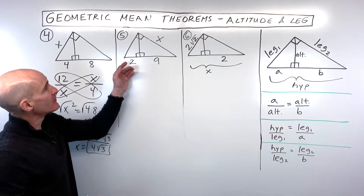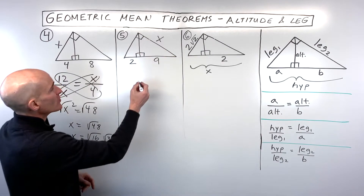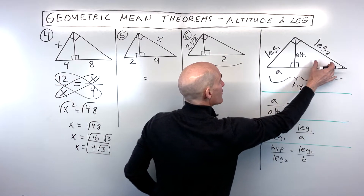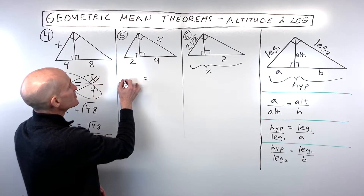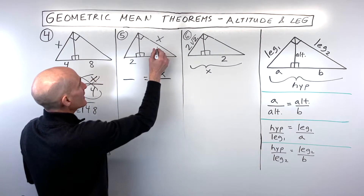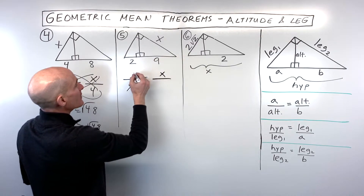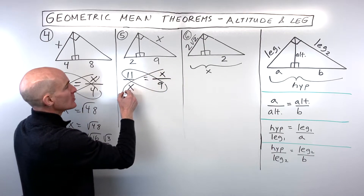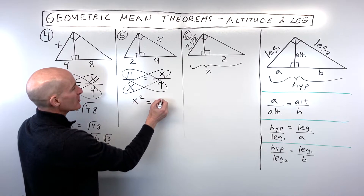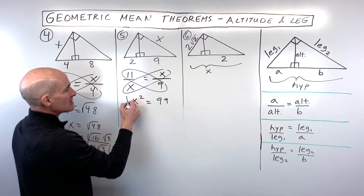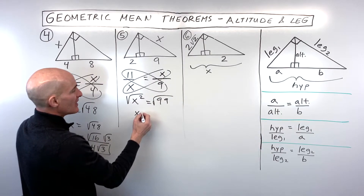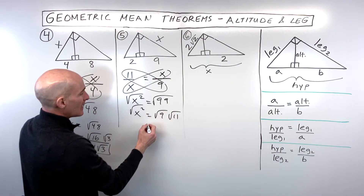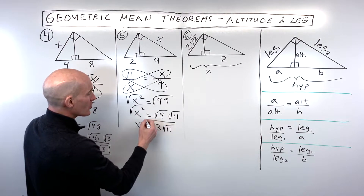For number five, we're solving for leg number two. Leg two is the geometric mean of the whole hypotenuse, which is 11, and the part of the hypotenuse adjacent to that leg, which is 9. Cross multiplying gives x squared equals 11 times 9 = 99. Taking the square root: √99 = √(9 × 11) = 3√11.